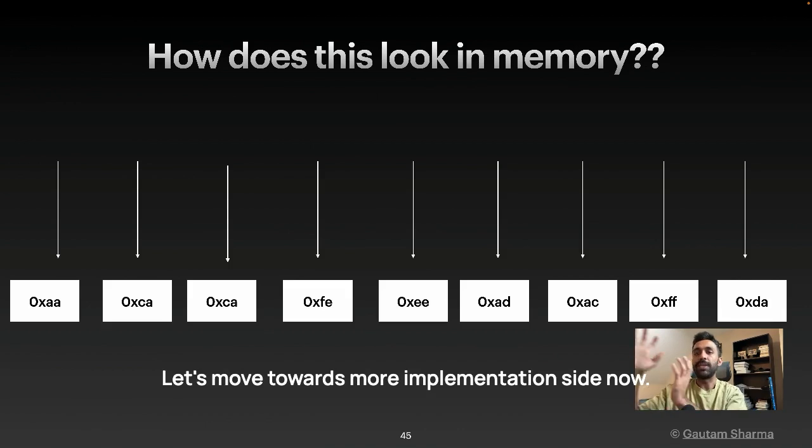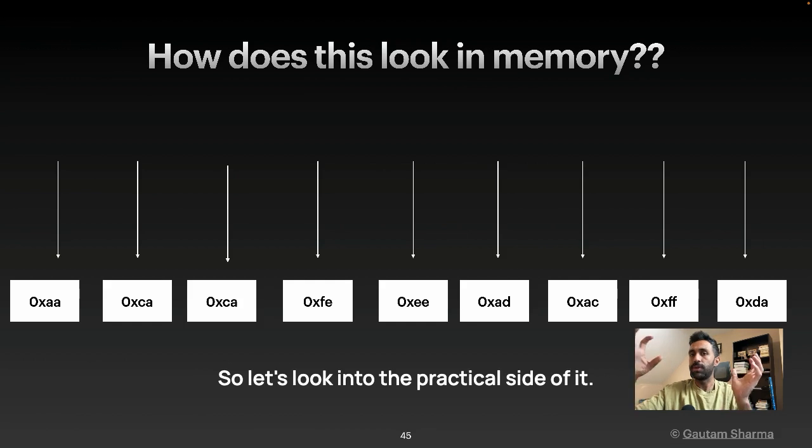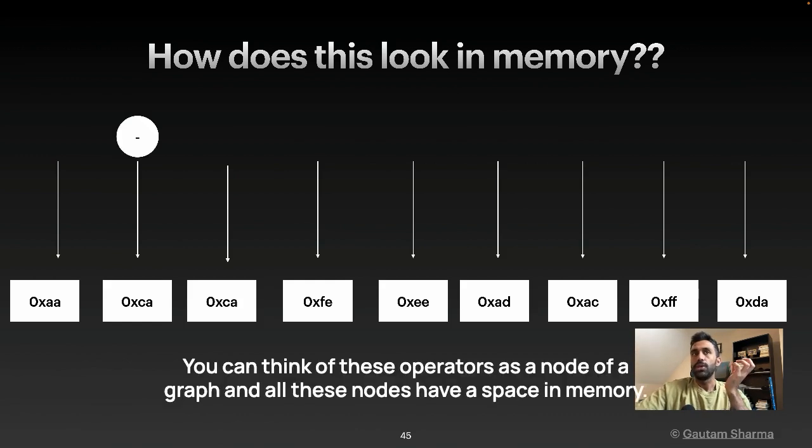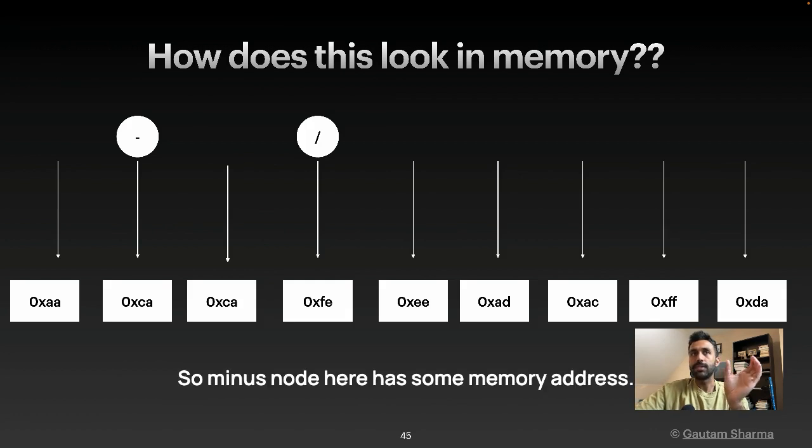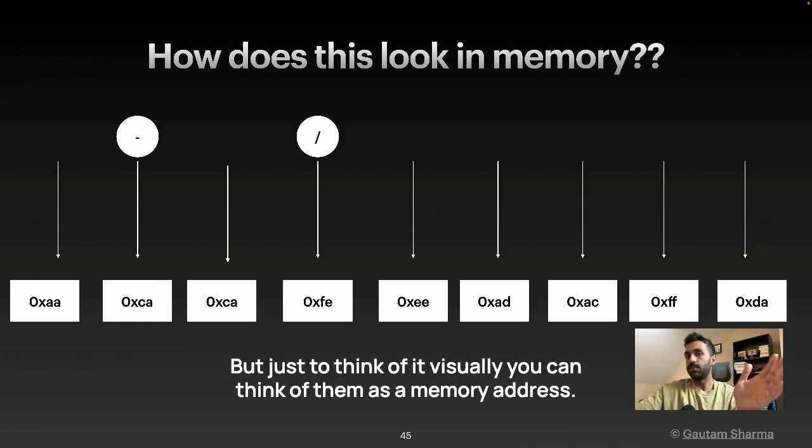Let's move towards more implementation side. Now, I think we have covered a good amount of theory. So let's look into the practical side of it. How does all these operators really look like in memory? You can think of these operators as a node of graph. And all these nodes have a space in memory. So minus node here has some memory address, the division node has some memory address, it has some state also that we will cover when we implement it. But just to think of it visually, you can think of them as a memory address.